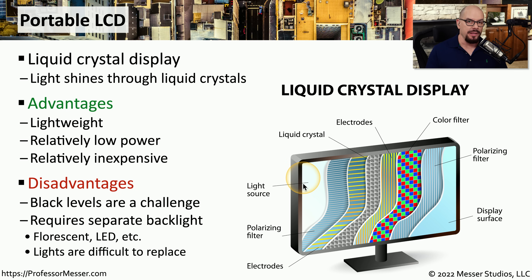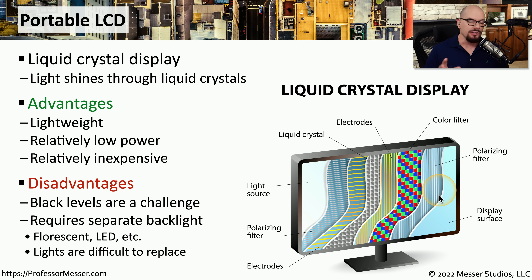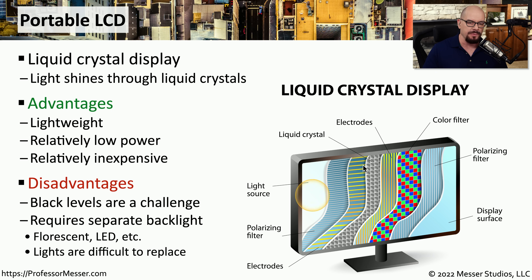There are some disadvantages with LCD displays. One is that the light source in the back has to shine through to provide the color, which means getting a true black can be quite difficult on an LCD display. We might also have different kinds of backlights — the light source may be fluorescent, LED, or some other type of light. If this backlight were to fail, it is part of the display itself, making it relatively difficult to repair or replace.